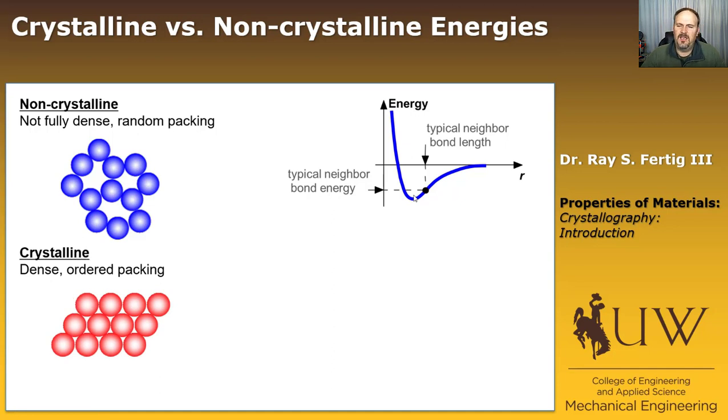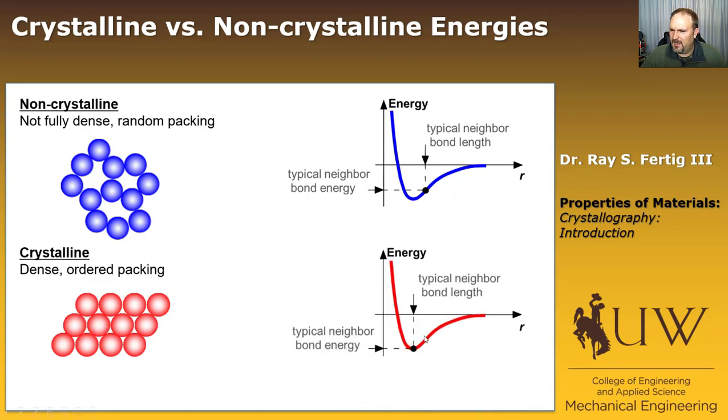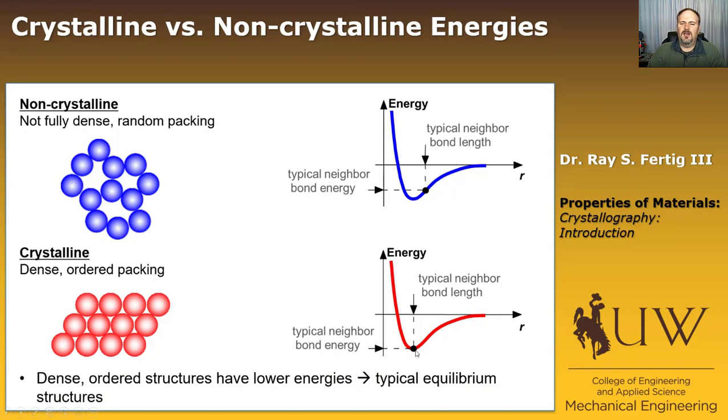In contrast, if you have dense and ordered packing like is common in a crystalline material, so this is obviously a very ordered hexagonal packing. This is actually the kind of packing that each layer of atoms in aluminum and copper, silver, gold, this is what that layer looks like. It's actually a hexagonal packing, just like I'm showing you here. In this case, the packing is optimal. And so the bond energy is at its minimum. So in general, dense ordered structures have lower energies, which means that typically our equilibrium microstructures are dense and crystalline.